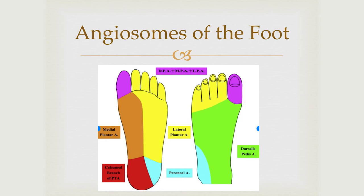Angiosomes are important to think about — where is the ulcer? Dr. Prasad was the first one who ever asked me, what angiosome do you want me to work on? And I had never even thought about it before. It's important to realize where are we working, where's the ulcer, where's the ischemia, where do we need to target.